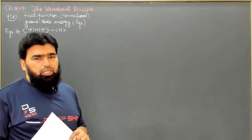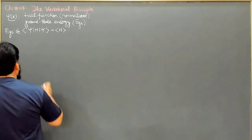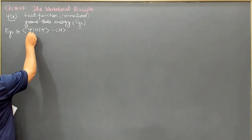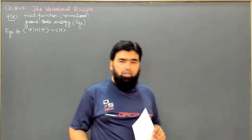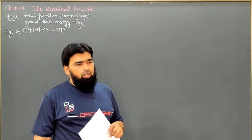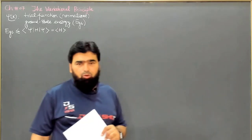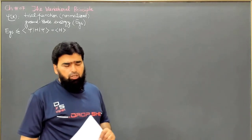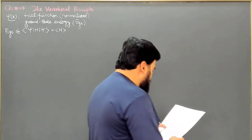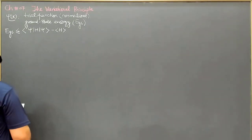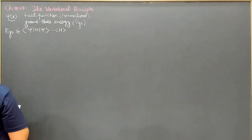To illustrate this, consider the harmonic oscillator. The harmonic oscillator wave function is like a Gaussian wave function. So we will take a general Gaussian function as our trial function, and then we will reach the ground state energy of the harmonic oscillator. Let me now show that this approach gives the correct result.